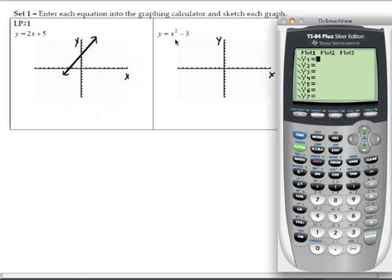And I'm going to enter in x squared minus 3. So hit the variable key for x, and then the x squared key to put the x to the 2 up there, and then minus 3. Let's hit graph.